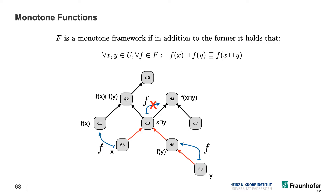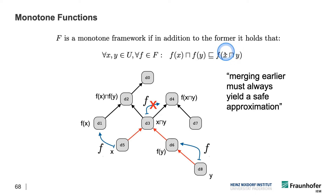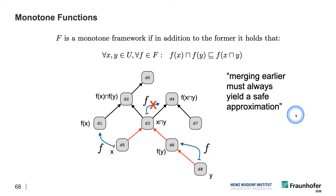What this basically means is that we are demanding that merging earlier must always yield a safe approximation. We arrange values in the lattice because values that are larger in the lattice are always more coarse-grained approximations — they are safe or sound approximations of potentially more precise values that are further down in the lattice. On the right-hand side we are merging before applying the flow function, whereas on the left-hand side we merge after the flow function has been applied. That's why we demand that merging earlier gives us a larger, and therefore more approximative, value.